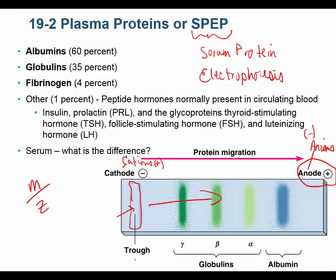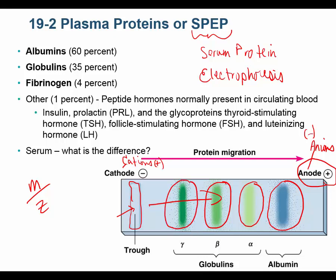At physiological pH, our proteins are negatively charged, so they travel toward the anode. Albumin, at about 60 kilodaltons, is one of the smaller proteins and travels the furthest. Then come alpha globulins, beta globulins, and finally the large gamma globulins, which travel the least distance because of their greater mass.